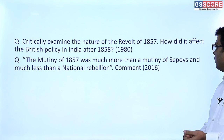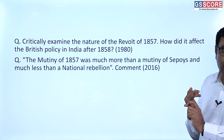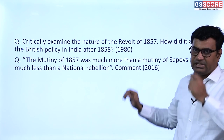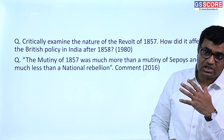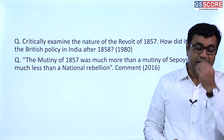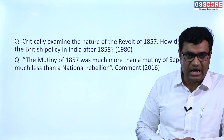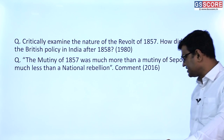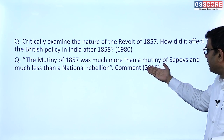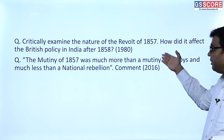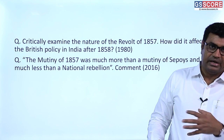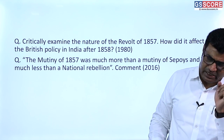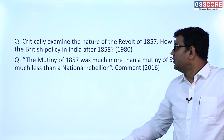Previous year questions: 'Critically examine the nature of the Revolt of 1857' — some say mutiny, some say popular, some say nationalist, others say guided by parochial sentiments. British became more reactionary toward educated Indians, Indian rulers, and particularly Muslim rulers after the revolt. Another question: 'The mutiny of 1857 was much more than a mutiny of sepoys and much less than a national rebellion.' It was more than a mutiny because the peasantry also supported it, but it fell short of a national rebellion as the feeling of nationalism was not yet developed in India.